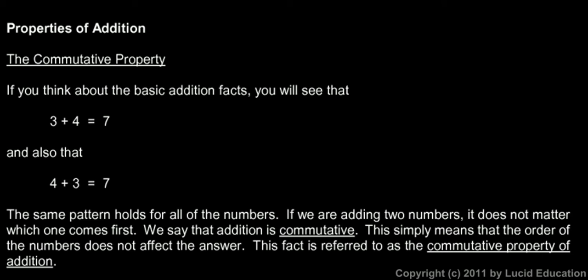If you think about the basic addition facts, you should know that 3 plus 4 equals 7. And you should also know that 4 plus 3 equals 7. It doesn't matter if I have the 3 first and then the 4, or if I have the 4 first and then the 3. And that pattern holds true for any numbers that we want to add together. If we're adding two numbers, it doesn't matter which one comes first. The order doesn't affect the answer. We say that addition is commutative.